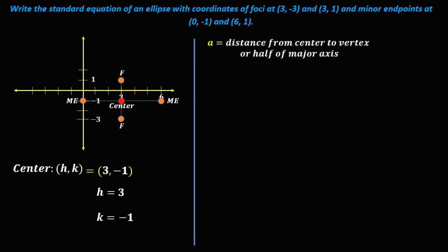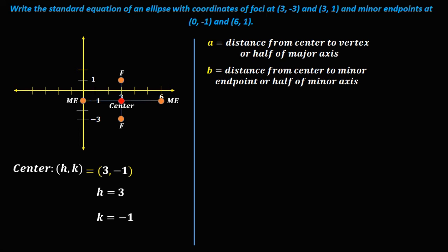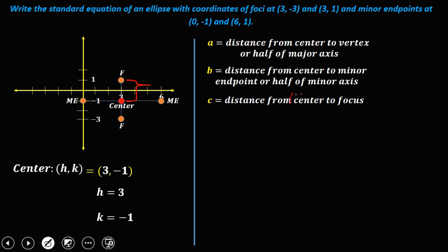Recall the key distances: a is the distance from center to vertex (half the major axis), b is the distance from center to minor endpoint (half the minor axis), and c is the distance from center to focus. From the graph, count from the center to a focus: 1, 2 — so c = 2. Count from the center to a minor endpoint: 1, 2, 3 — so b = 3.